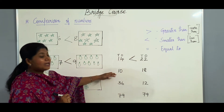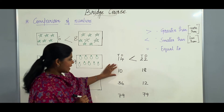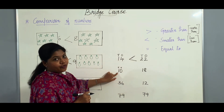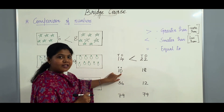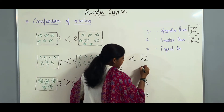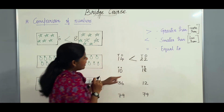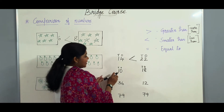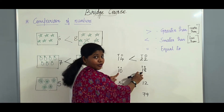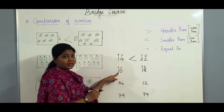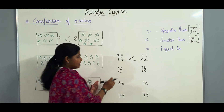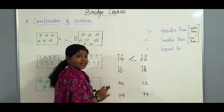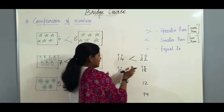Now let us go to the next number: 10 and 18. In the tens place we have 1 here and in the ones place we have 0. And here in the tens place we have 1 and in the ones place we have 8. As we can see, the tens digits are both 1 — so these two are the same. As the tens are the same, we go to the next digit. In the ones place here it is 0 and here it is 8. So 8 is greater than 0, therefore 18 is greater than 10.